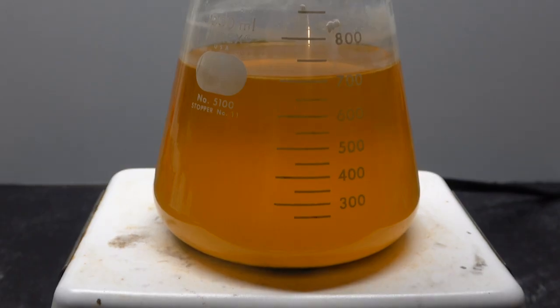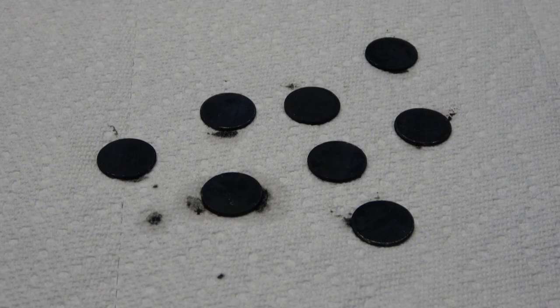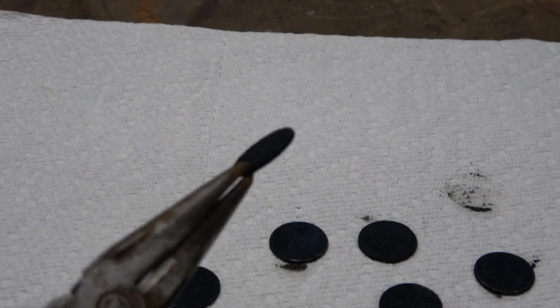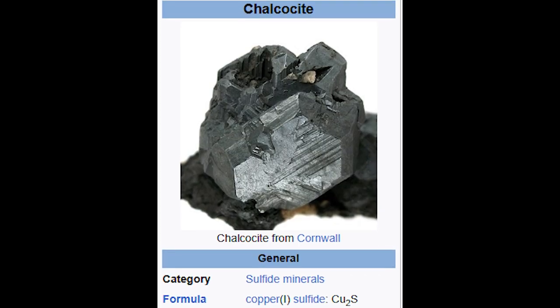Afterwards, the solution turns a dark orange similar to copper. This is caused by colloidal copper oxide that has been suspended in solution. The pennies themselves have turned black as some of the copper coating has been converted to copper sulfide or chalcocite, which has a naturally black appearance.